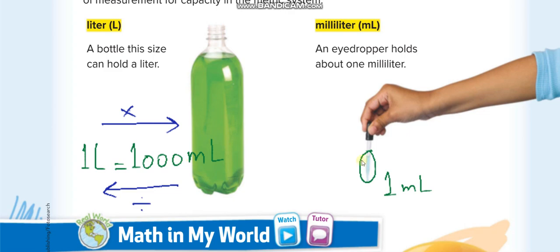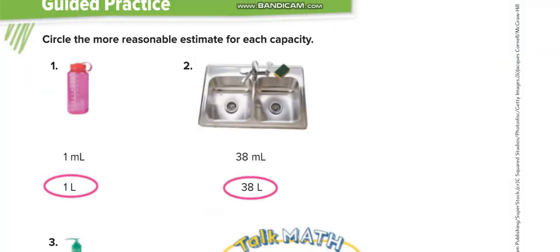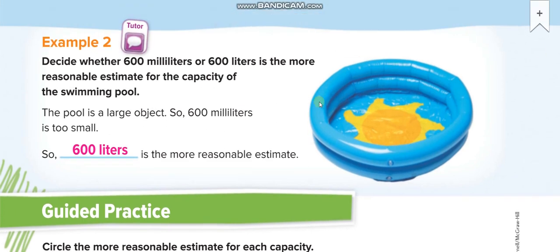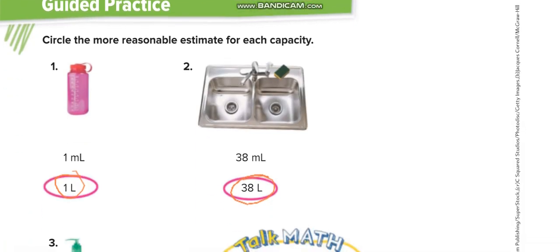So 600 milliliters will be very less for this pool. The reasonable estimate for this pool is 600 liters. Circle the more reasonable estimate: for this bottle, of course not one milliliter, not just an eyedropper - one liter.